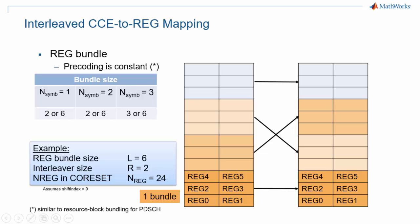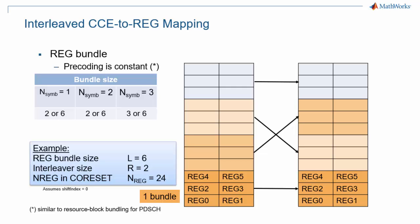5G NR allows for interleaved CCE-to-REG mapping with different bundle sizes, meaning that contiguous physical resources may not correspond to contiguous bits in the PDCCH. The interleaving defines a bundle size which introduces a similar concept as resource block bundling for PDCCH, enabling specification of blocks of resources guaranteed to have the same precoding. Resource block bundling for PDCCH is further discussed in another episode of this 5G Explained series about channel sounding.